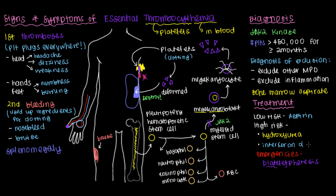Most cases of essential thrombocytemia never get that severe — most patients are in the low-risk range and are treated with something as benign as aspirin. With all of this covered, you're now able to identify, diagnose, and think about how to treat essential thrombocytemia.